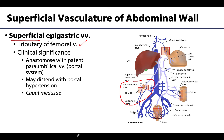With increased pressure in the portal venous system, such as with portal hypertension, these veins may become dilated. The distension of veins in this region is referred to as caput medusae, due to its resemblance to Medusa's head with snakes extending laterally. These veins can be noticeably varicose or distended extending from the umbilical region. We'll revisit this in more detail when discussing the liver and portal-caval anastomoses.